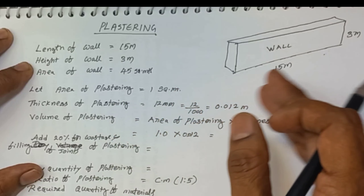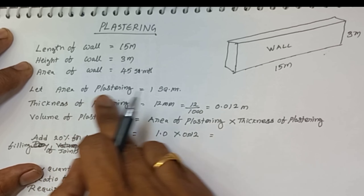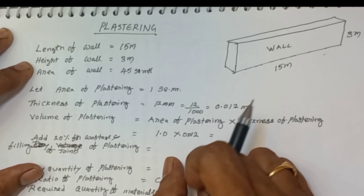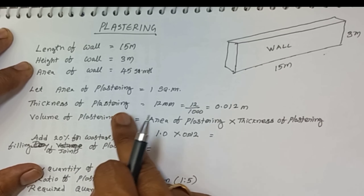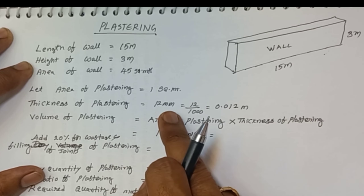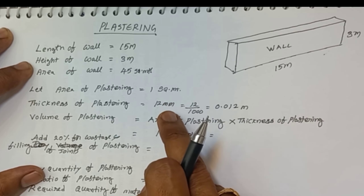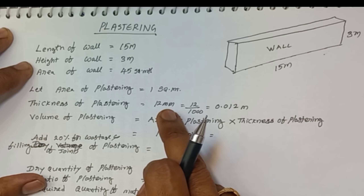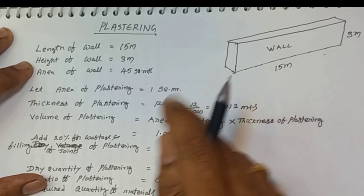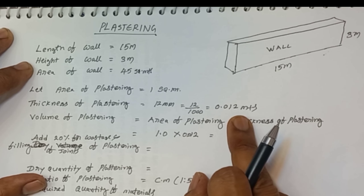Here I have taken the area of plastering as 1 square meter with 12 mm thickness. The thickness of plastering is 12 mm and the area of plastering is 1 square meter. Since the units are in millimeters, 12 mm means 12 divided by 1000, which is equal to 0.012 meters. So area is 1 square meter and thickness is 0.012 meters.